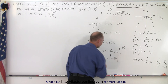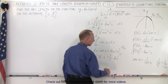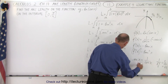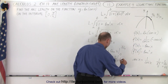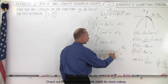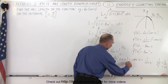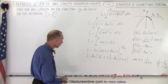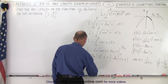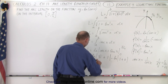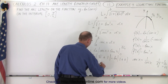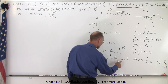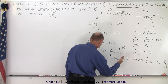Minus the natural log evaluated at 0. Plugging in 0 for x: the secant of 0 is 1 over 1, which is 1, and the tangent of 0 is 0. So we have the natural log of 1 plus 0. The natural log of 1 is 0, so that term drops out entirely.